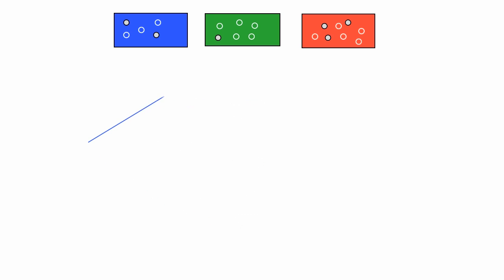There is a one out of three chance I'll pick a blue box, a one out of three chance I'll pick a green box, and a one out of three chance of picking a red box. All these one-thirds add up to one, or 100%.